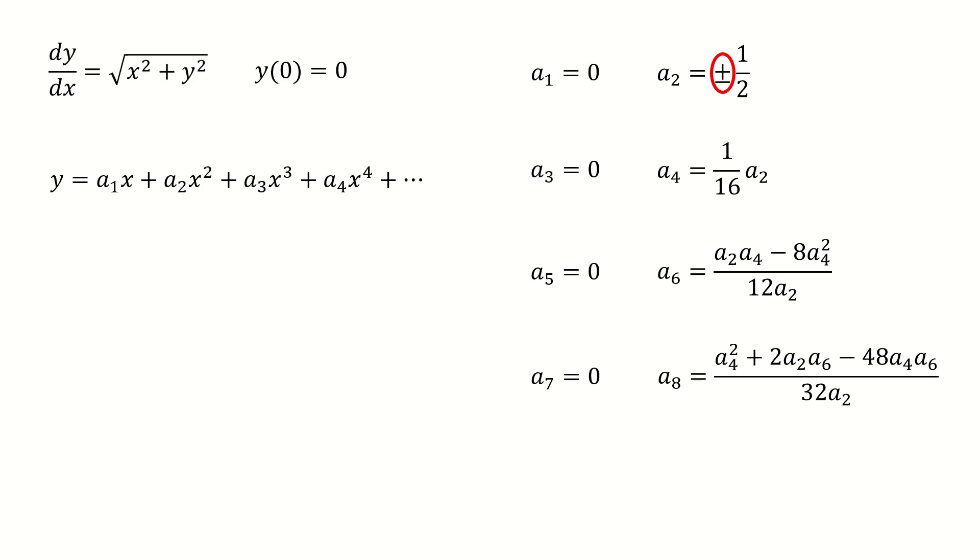So I copied the results from previous slide. And to determine a2 is positive or negative, we need to go back to our original equation. Because those odd terms vanish, so this solution is reduced here. And note here, for our original differential equation, the right hand side is square root, so it's non-negative.